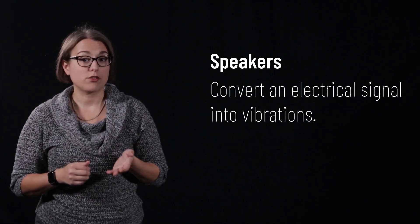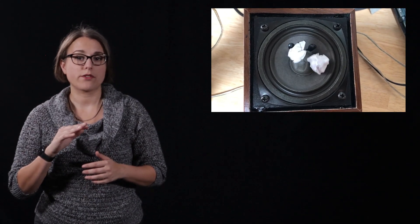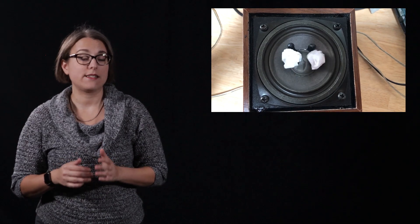Speakers turn an electrical signal into vibrations. On this speaker, I've placed some small pieces of paper. As I turn on the sound source, the speaker membrane vibrates back and forth. The frequency of the sound source controls how quickly these vibrations occur. At low frequencies, it is easy to see the pieces of paper moved around by the vibrations.